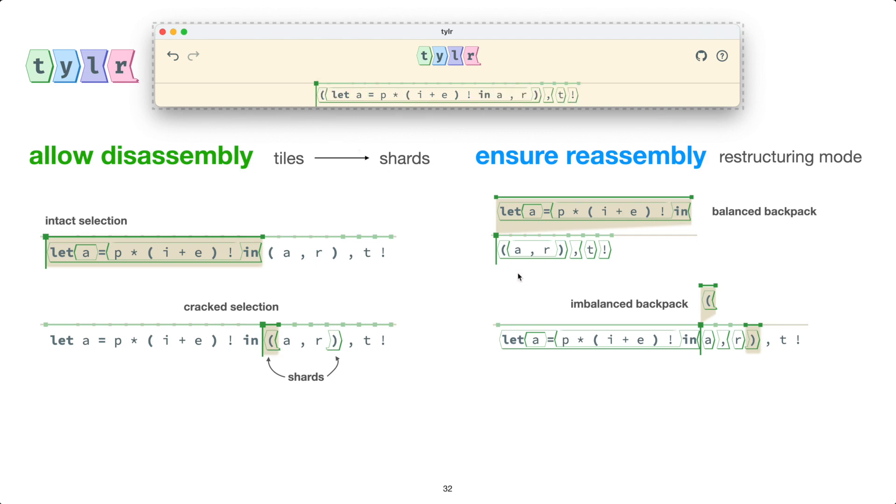Now, notice how when I picked up this left parentheses, the matching right parentheses is also highlighted. And this is to indicate that we can also pick up that matching parentheses. So as a different example, let's go over to these parentheses here. I'm going to pick up this left parentheses. I have an imbalanced backpack, so I cannot escape this current tile sequence. But what I can do is I can go over here, I can pick up the other matching shard. Now I have a balanced backpack again. And so now I can move freely. And I can say, put this down over here.